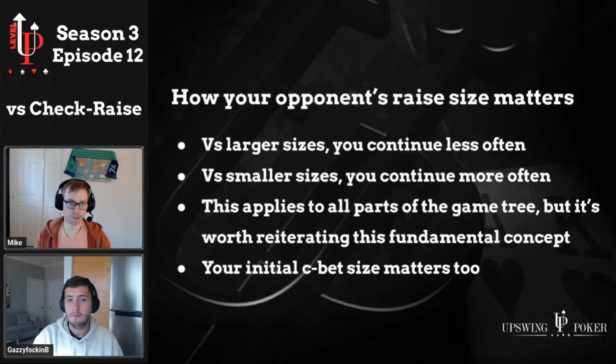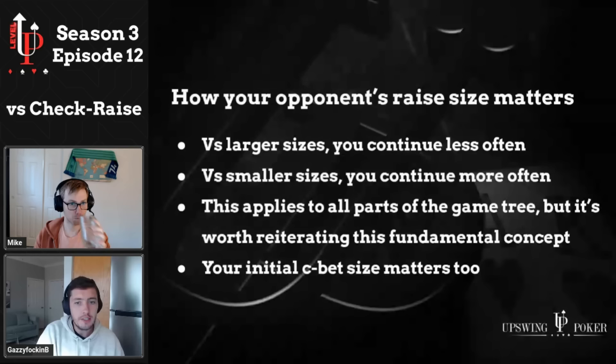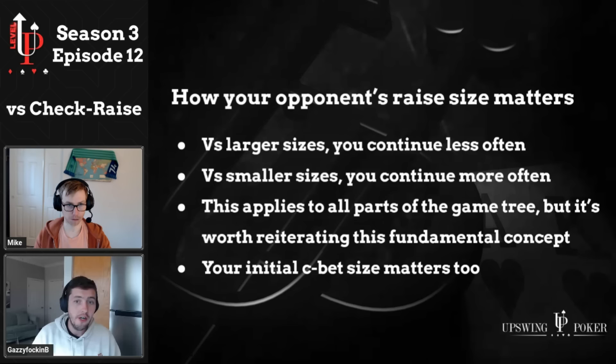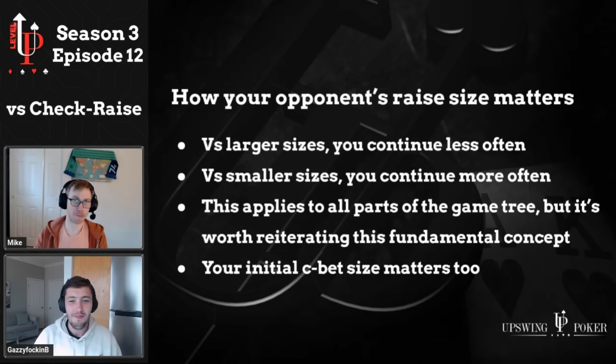The first thing to consider is sizing — both the raise size of your opponent and the c-bet size that you used initially. How does your opponent's raise size impact how you should respond to the check raise? When your opponent uses larger sizes, you will defend at a lower frequency, and when your opponent uses smaller sizes, you defend wider. So when your opponent check raises for a small size, you're going to call much wider, and when they check raise for a larger size, your range is going to get much narrower. That applies to all parts of the game tree. Yeah, really fundamental stuff — it's just pot odds.